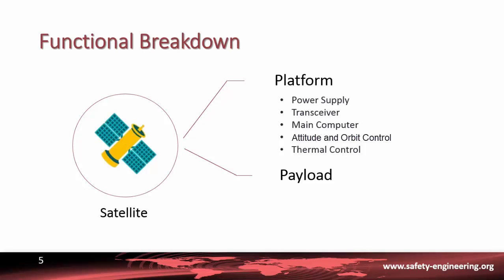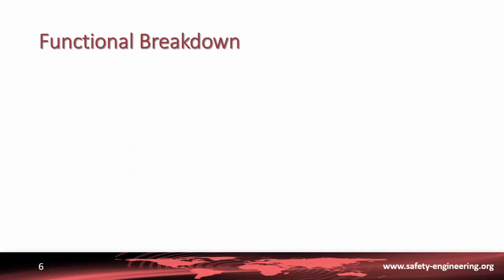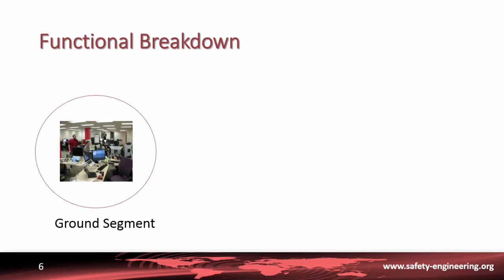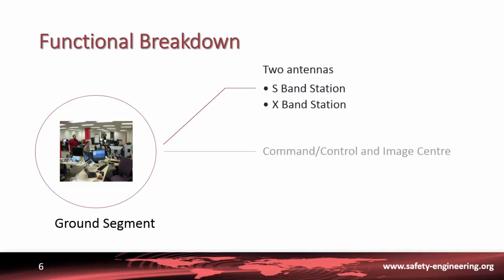The payload contains all the image detection, compression, storage and transmission units. The ground segment includes the two antennas, the command control and image center, and the data communication network.